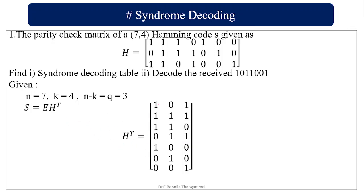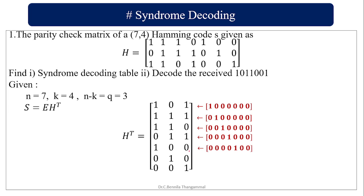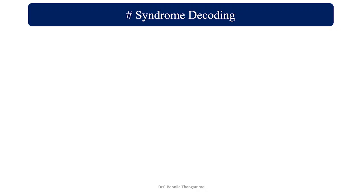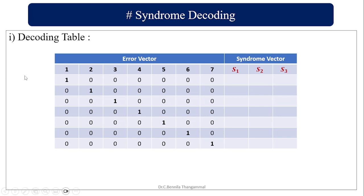In this H transpose, each and every row corresponds to a syndrome vector. If error occurs in the first bit, the first row of H transpose will be the syndrome vector. Similarly, rows correspond to errors in the second, third, fourth, fifth, sixth, and seventh bits. With this, we can construct the syndrome decoding table. The table maps each error vector — with seven bits — to its corresponding syndrome vector, which is the row of H transpose.